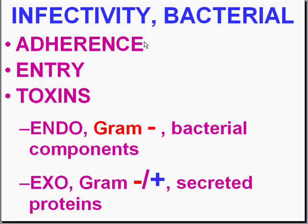What are the general elements of bacterial infectivity? Like viruses, bacteria have to get into your body, breaking down barriers. Because bacteria do not usually have direct entry into a cell, they have to do damage in other respects. The most common way bacteria do damage to cells is by virtue of toxins.